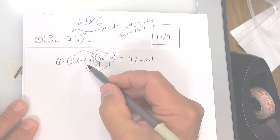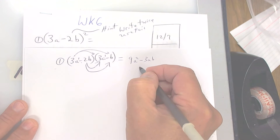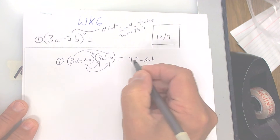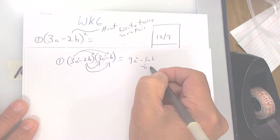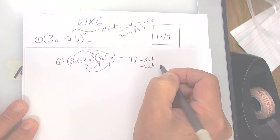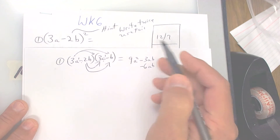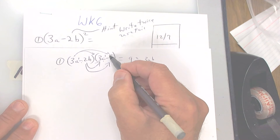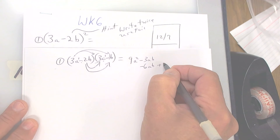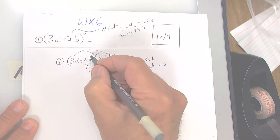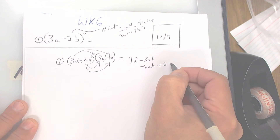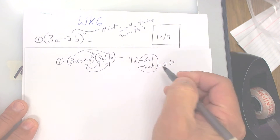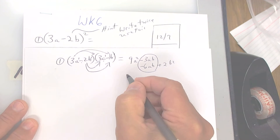Now go to the next one: a negative times a positive is a negative; two times three is six; a times b is ab. And then finally a negative times a negative is a positive; two times one is two; b times b — add your exponents — gives you b squared. This right here gives you a negative nine, so that's your final answer.